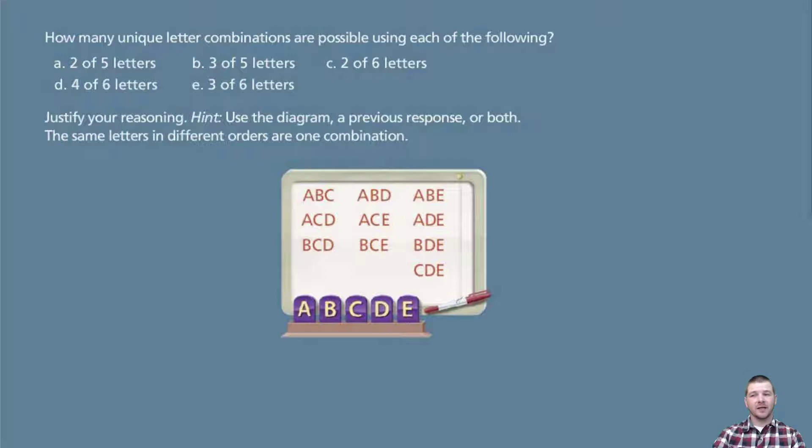A: 2 out of 5 letters. B: 3 out of 5 letters. C: 2 out of 6 letters. D: 4 out of 6. E: 3 out of 6.